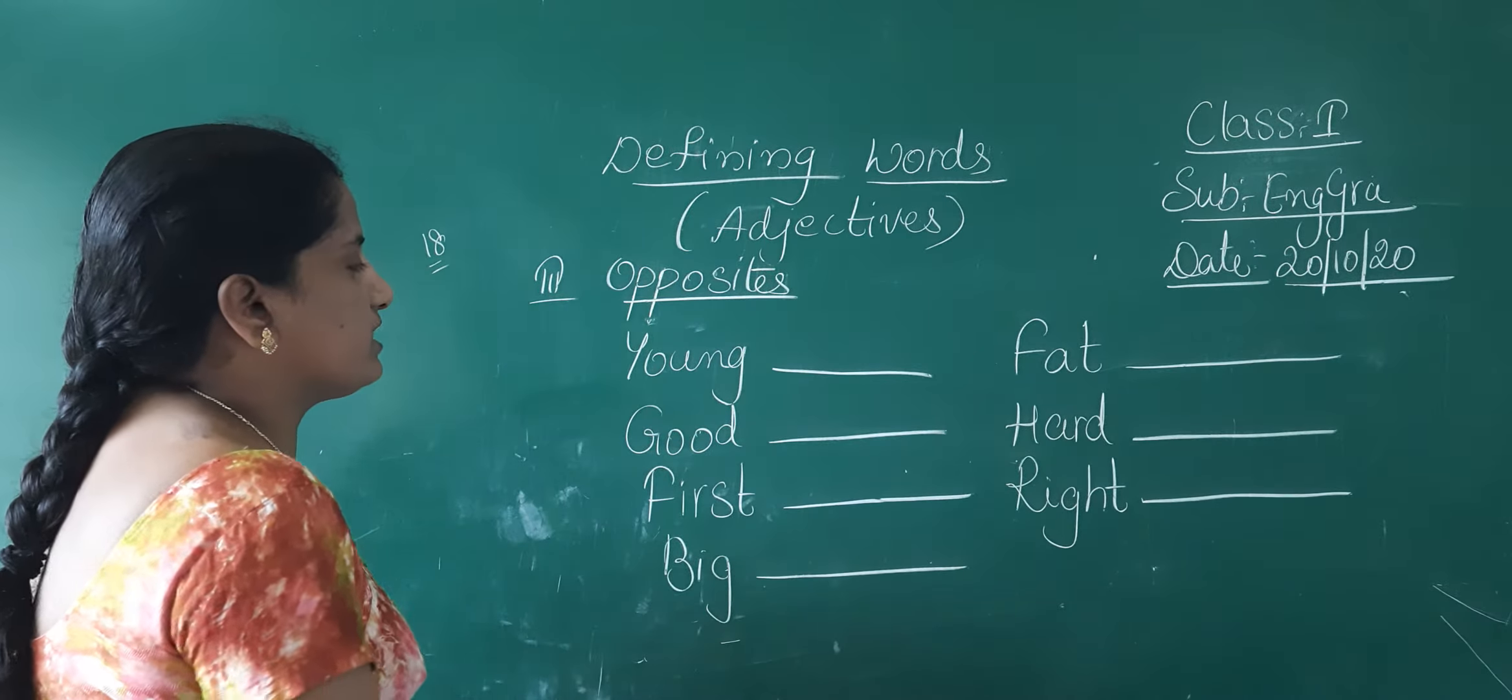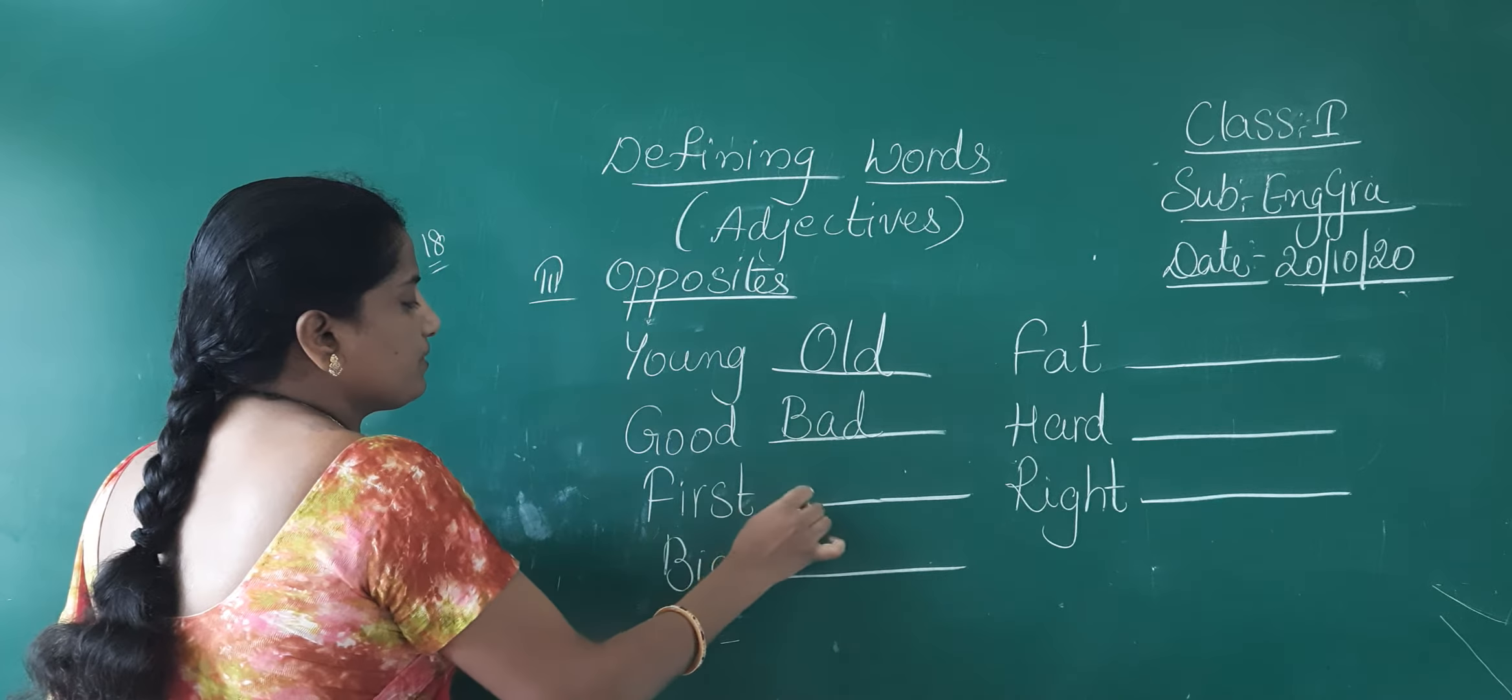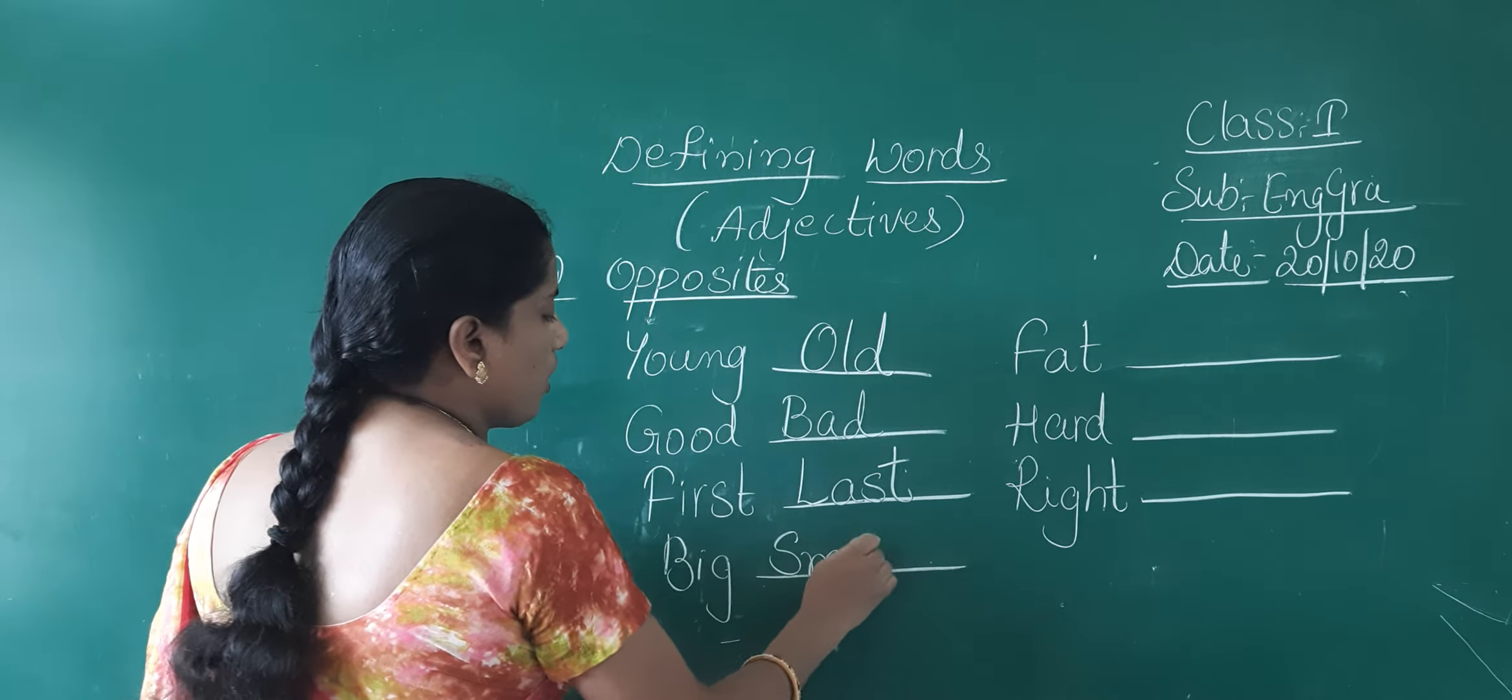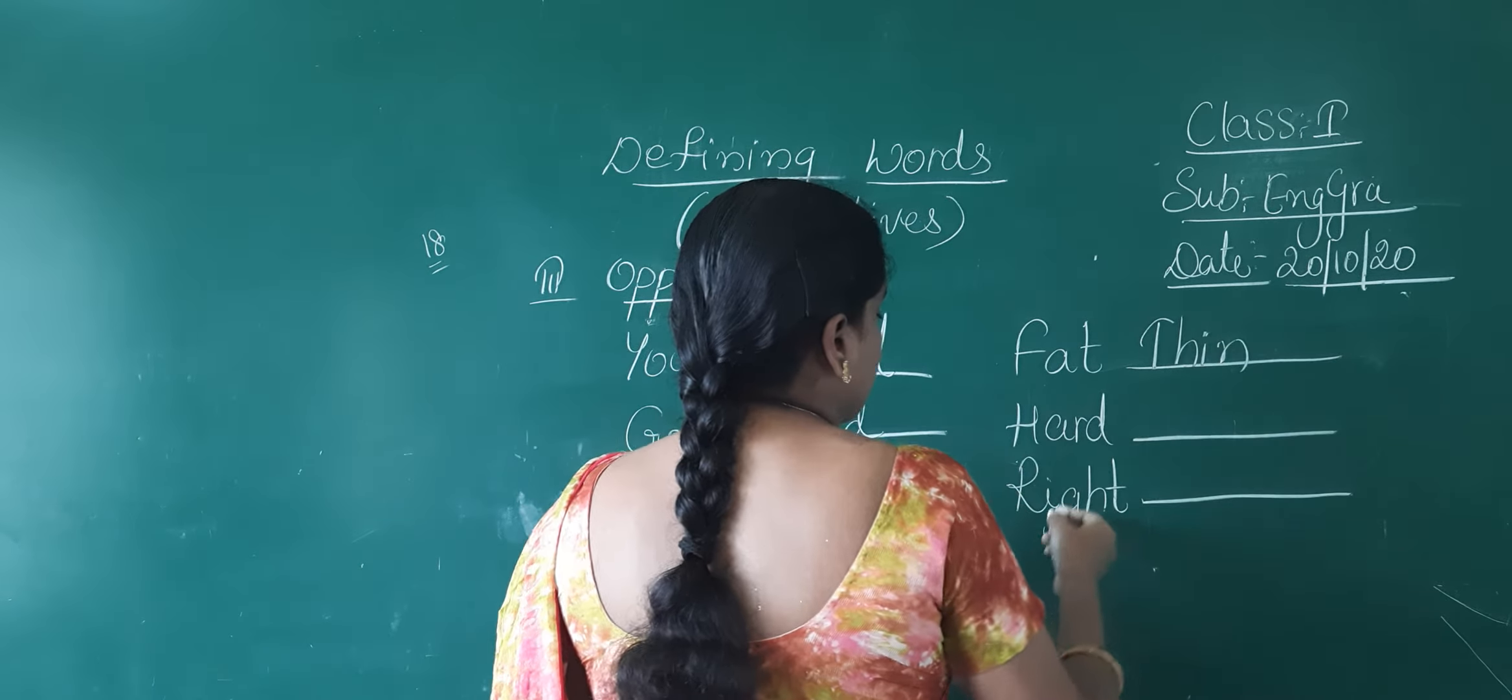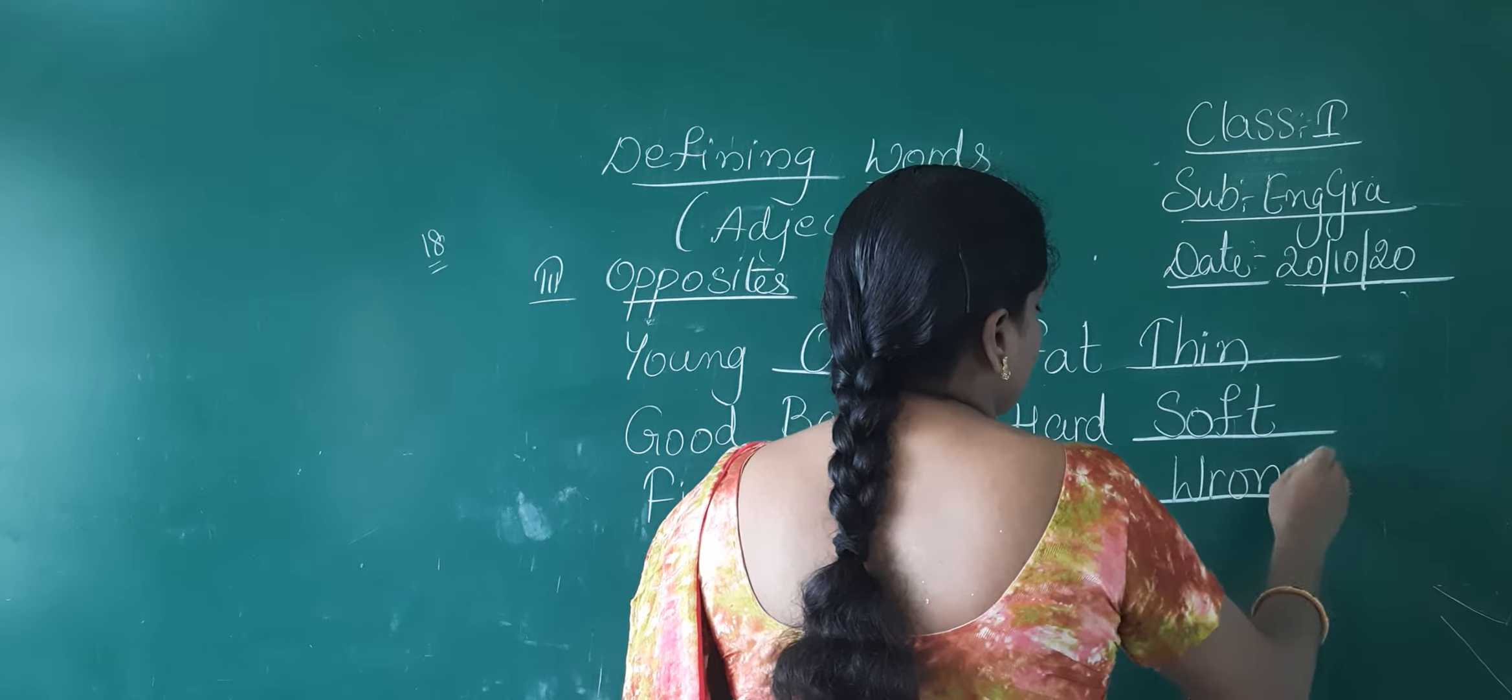Now, we should write the opposites. Young opposite, old. Young opposite, old. Good opposite, bad. First opposite, last. Big, big, small. Big, small. Fat opposite, thin. Fat opposite, thin. Hard opposite, soft. Right opposite, wrong. Right opposite, wrong.